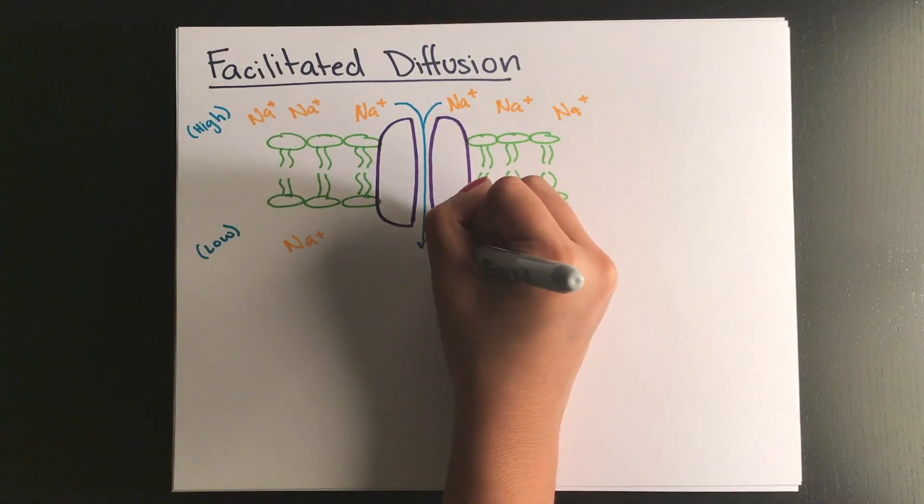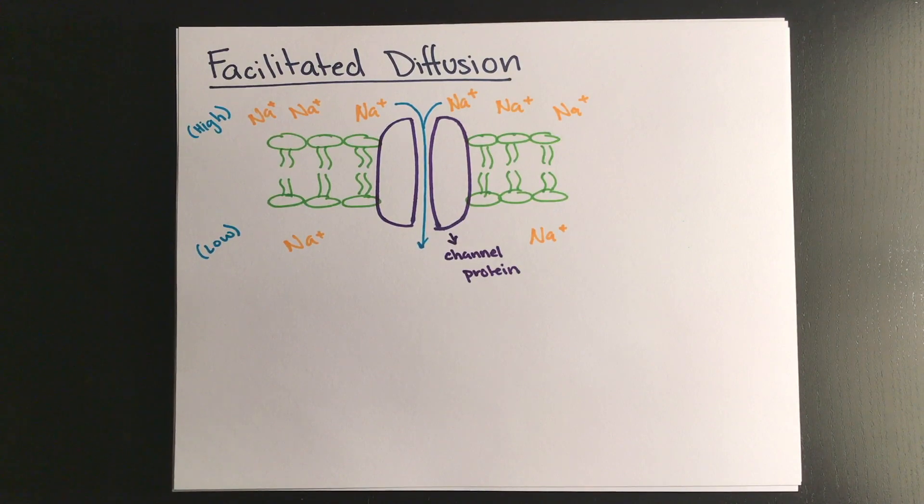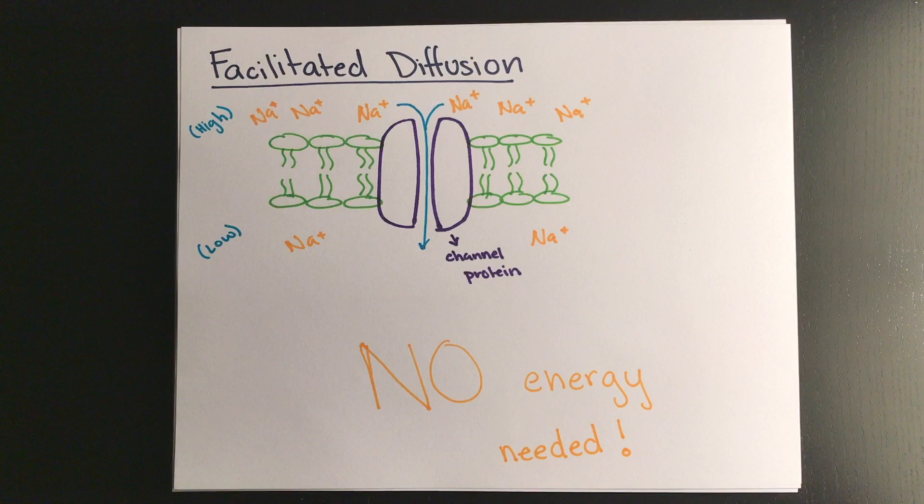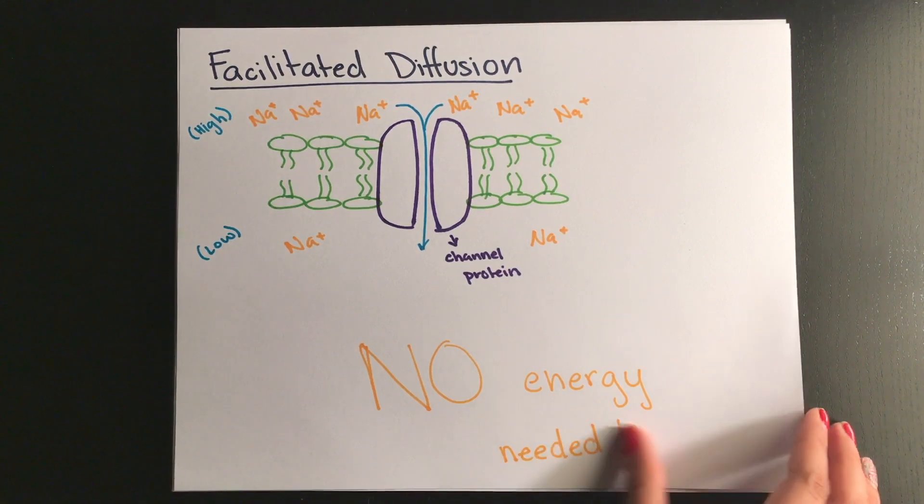Because no energy is required, both facilitated and passive diffusion are known as passive transport, because they go along the concentration gradient from a higher to a lower concentration.